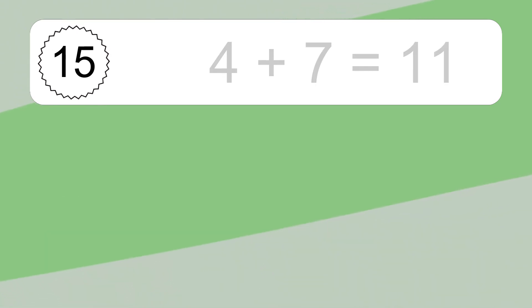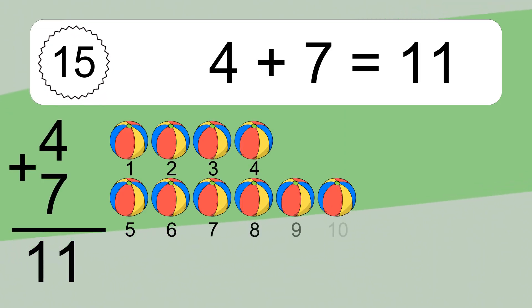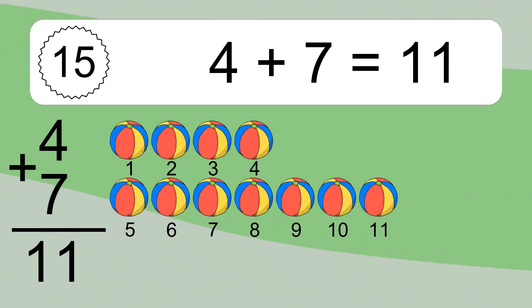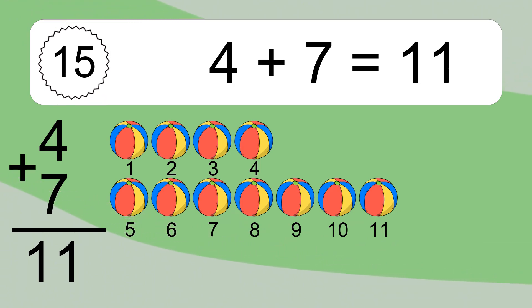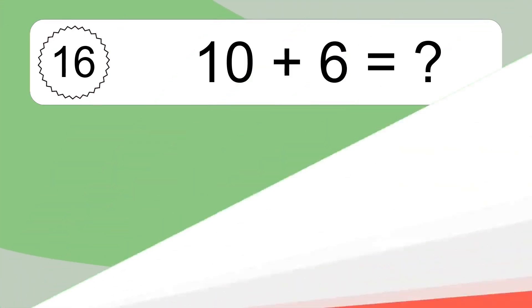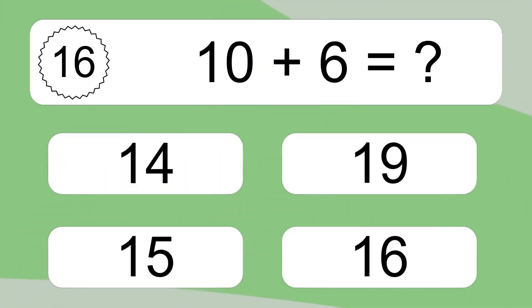4 plus 7 equals what? 4 plus 7 equals 11. Let's count it: 1, 2, 3, 4, 5, 6, 7, 8, 9, 10, 11.